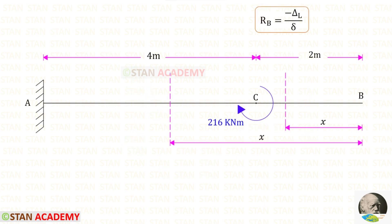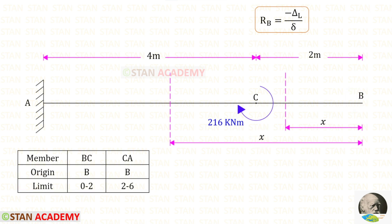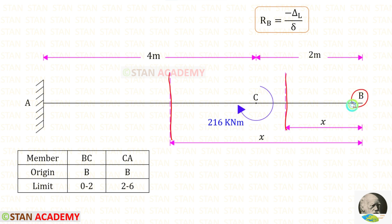You can see that I have made two sections, one in BC and one in CA, both at a distance of x from point B. Now let us make a table. In the table, first let us enter the members — BC and CA. For both sections the origin is B. The limit for BC is 0 to 2, and for CA it is 2 to 6.